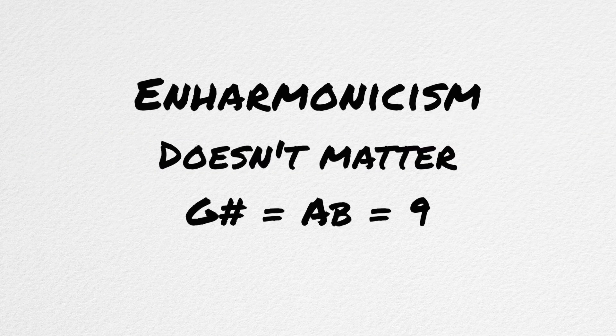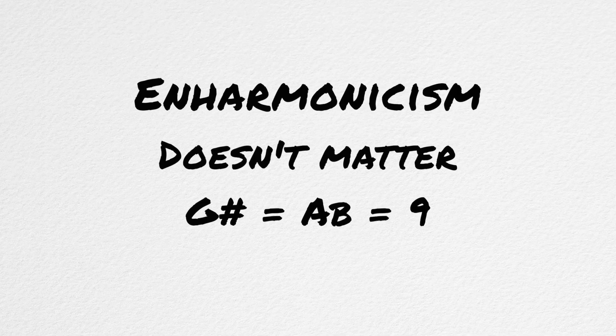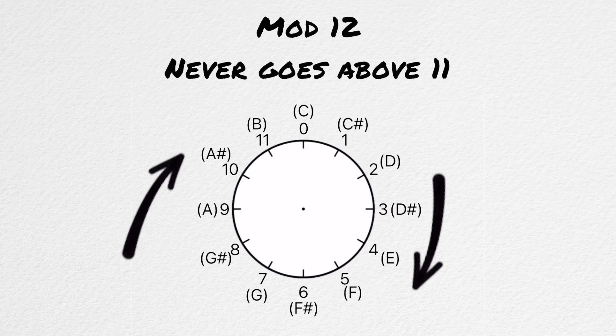In this system, enharmonicism doesn't make a difference. G-sharp is nine, whether it's written G-sharp or A-flat. Also, it's important to note that 12-tone rows are mod 12, which means that no number goes beyond 11. When it gets to 12, it just goes back to zero. A C will equal zero regardless if it's C1 or C6.